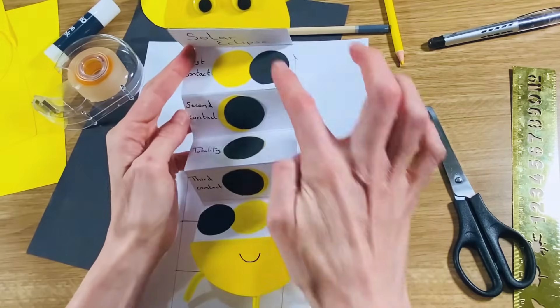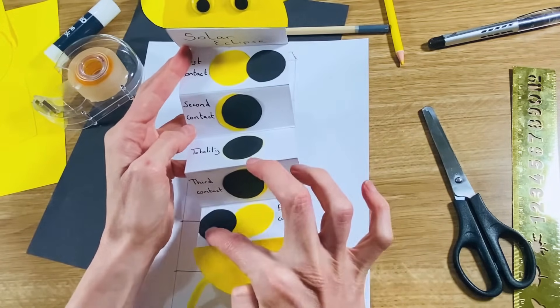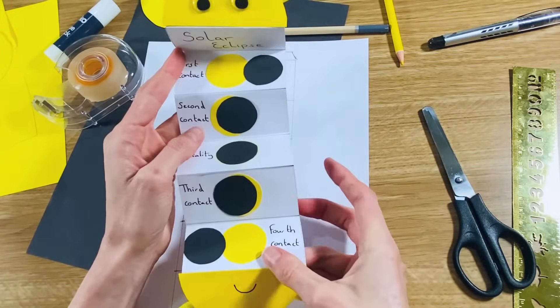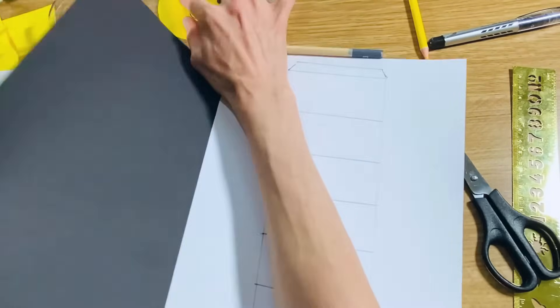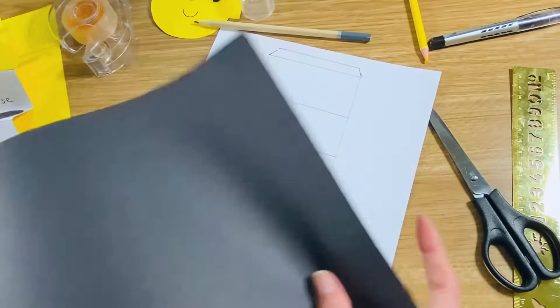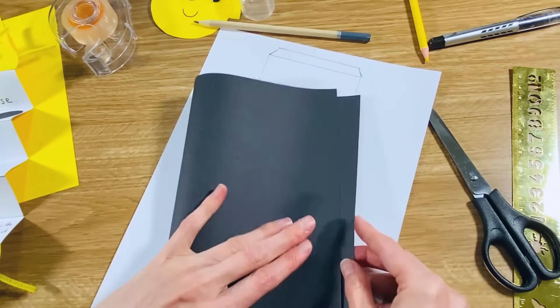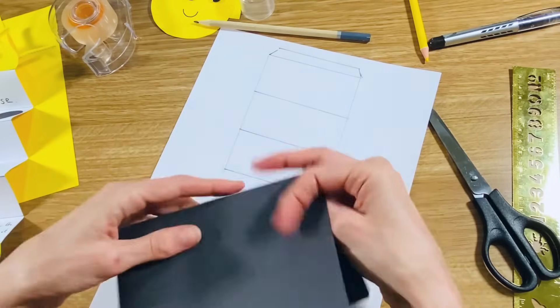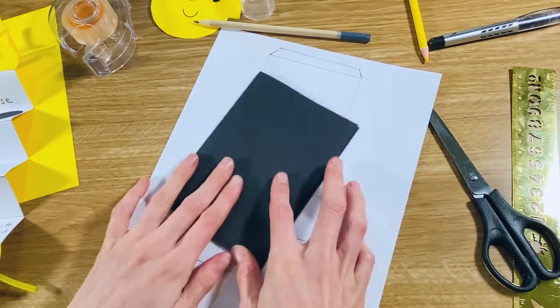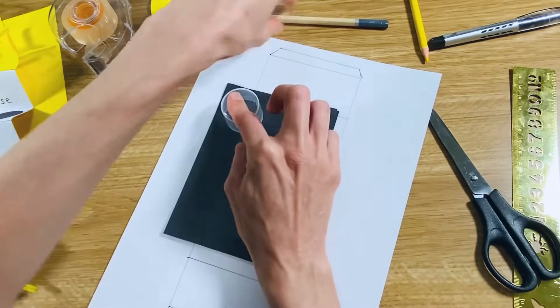So we're going to need one, two, three, four, five moons and we're going to need four yellow suns. And the easiest way to do that is I'm going to fold a piece of black paper in half and then I'm going to draw around my lid.